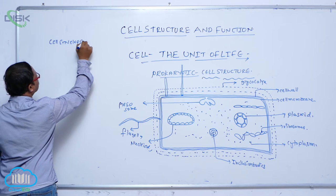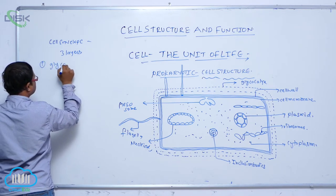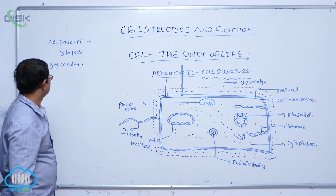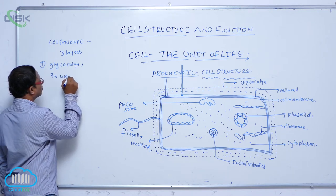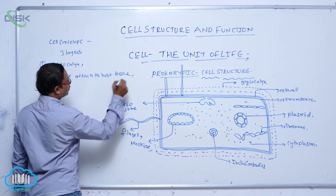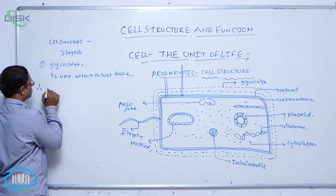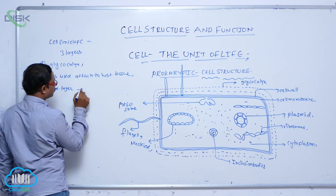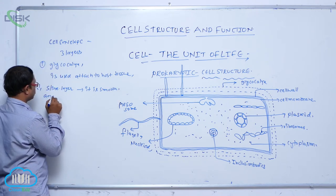In the cell envelope, there are mainly three layers. The first one is glycocalyx. Glycocalyx is generally used to attach to the host cell. In some bacteria, the glycocalyx is a slime layer, which is smooth and loosely attached to the cell wall.